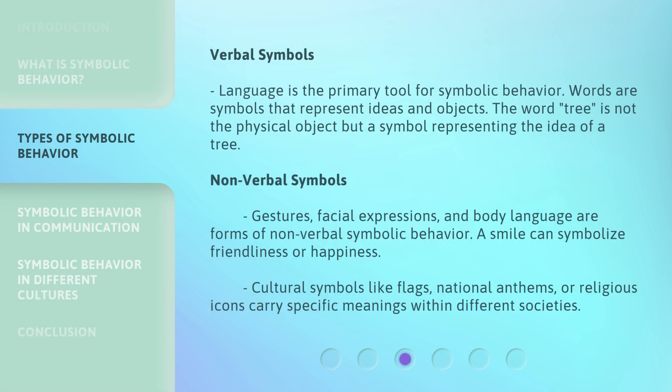Verbal Symbols: Language is the primary tool for symbolic behavior. Words are symbols that represent ideas and objects. The word 'tree' is not the physical object but a symbol representing the idea of a tree. Non-verbal symbols such as gestures, facial expressions, and body language are forms of non-verbal symbolic behavior. A smile can symbolize friendliness or happiness. Cultural symbols like flags, national anthems, or religious icons carry specific meanings within different societies.